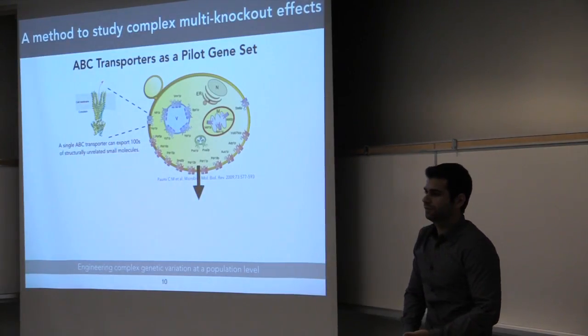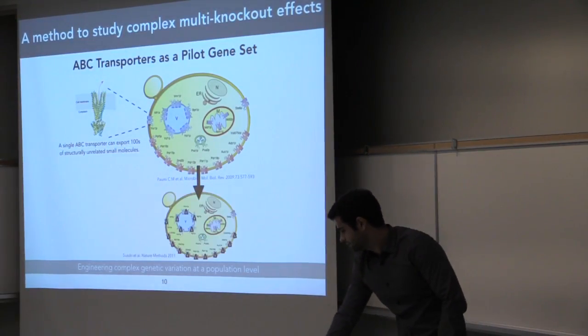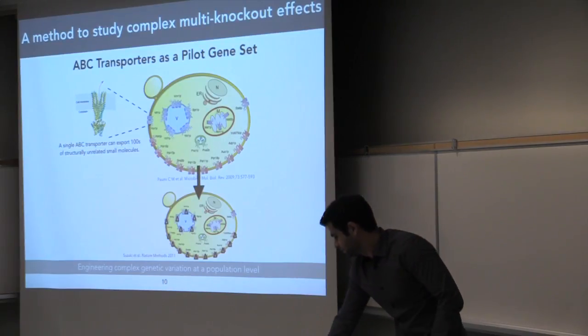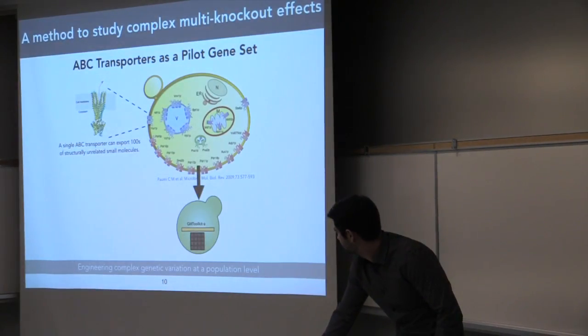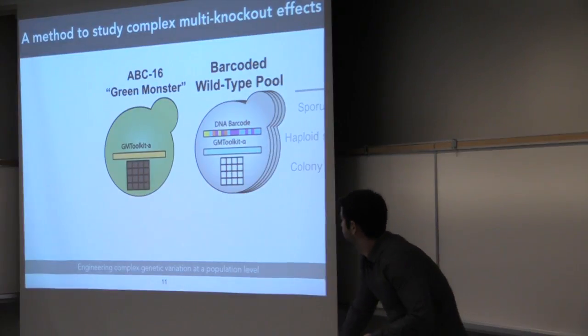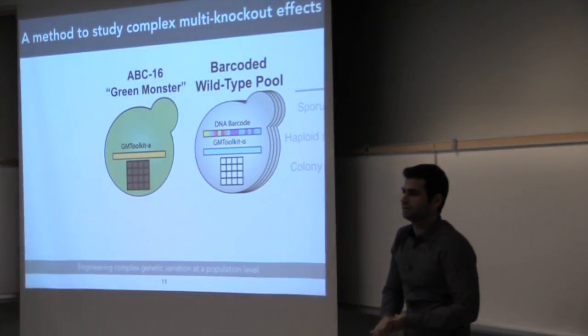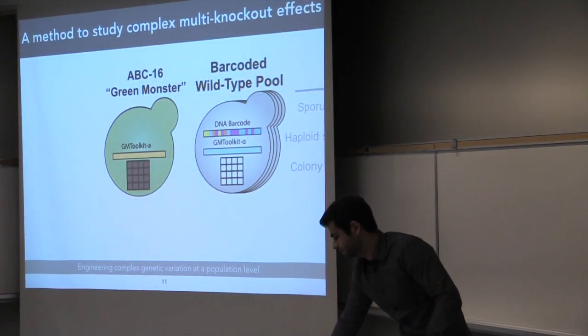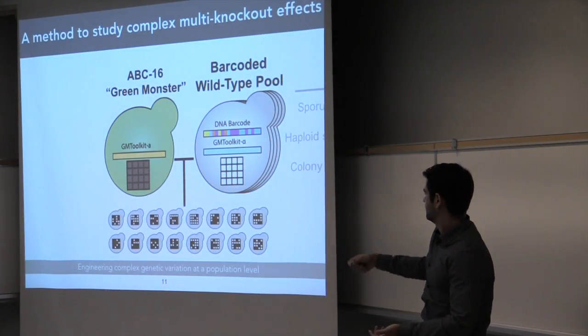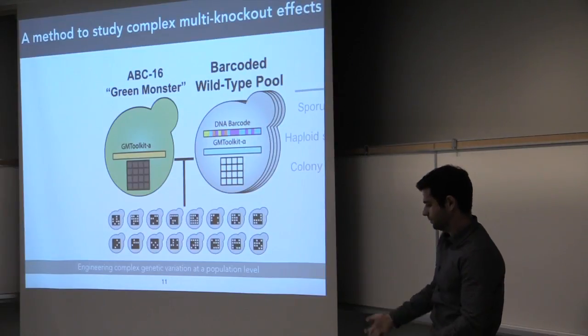And using technologies developed in our lab, we've been able to create a yeast strain which has 16 of these 22 transporters involved in multi-drug resistance knocked out, which are all hemizygous and such. And basically the idea is we take this 16 knockout strain, we cross it to a pool of wild-type cells, and just by random segregation, any of the progeny will have a random collection of knockouts among these ABC transporters.